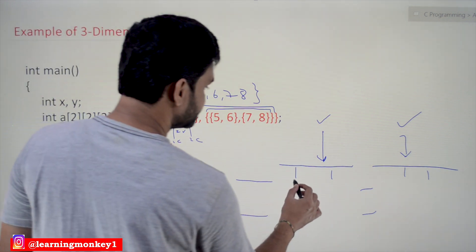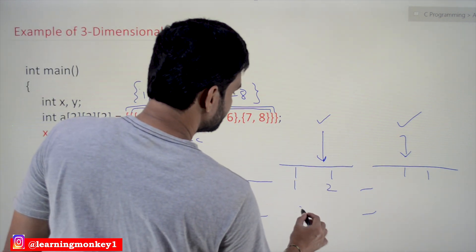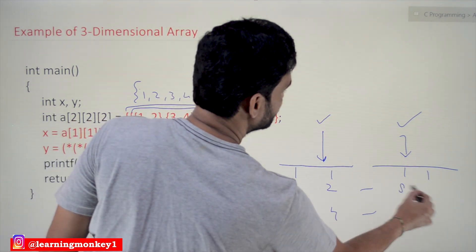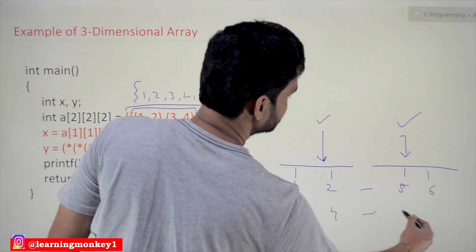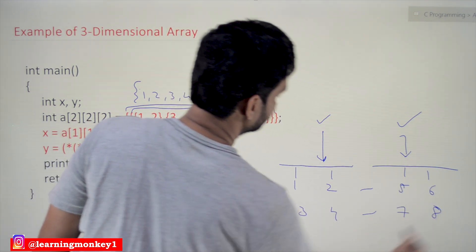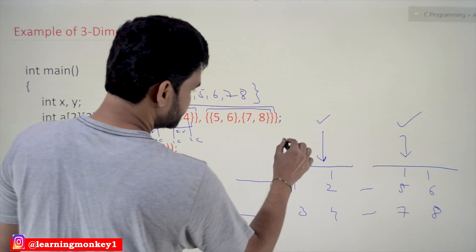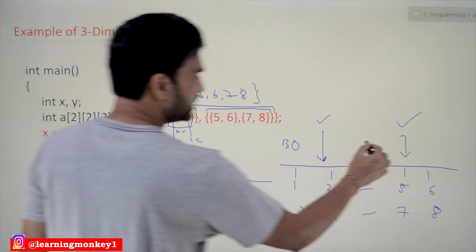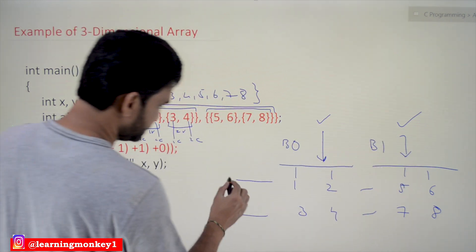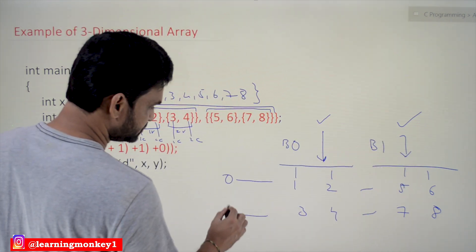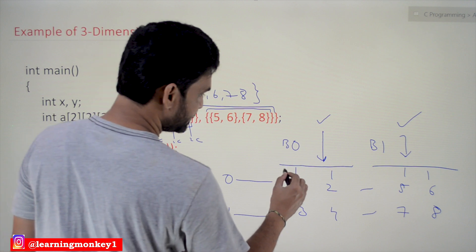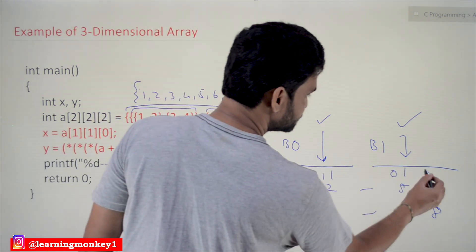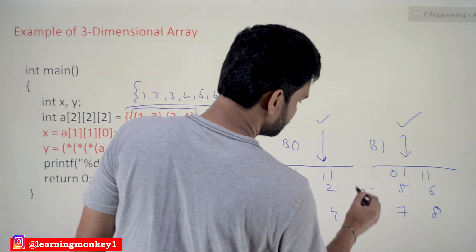The elements get inserted into the array as 1, 2, 3, 4, 5, 6, 7, 8. This is block 0 and this is block 1. These are row 0 and row 1, and column 0 and column 1 for each block.